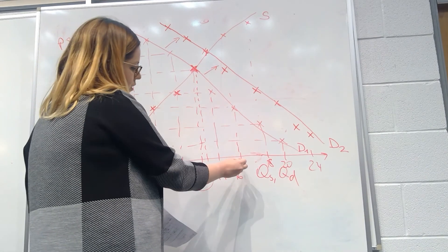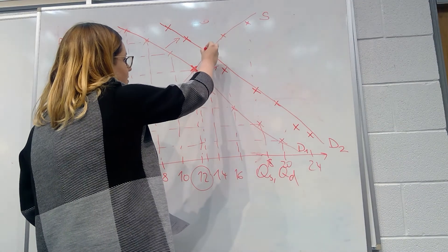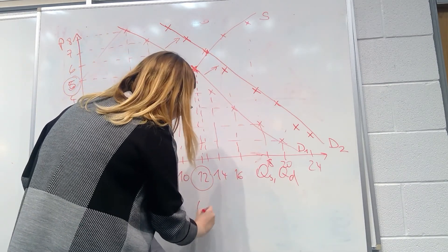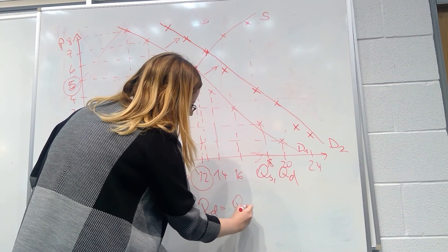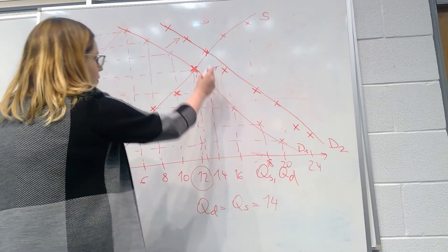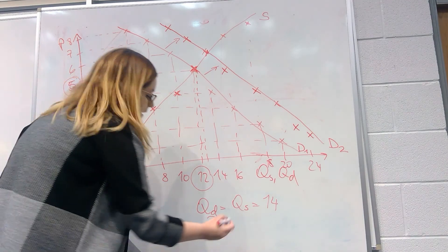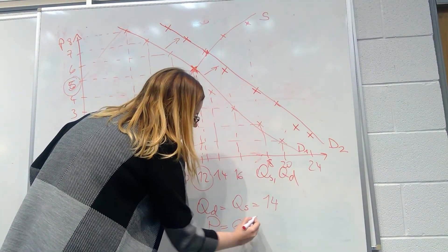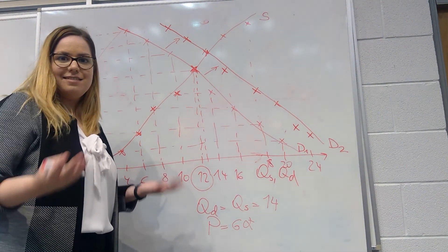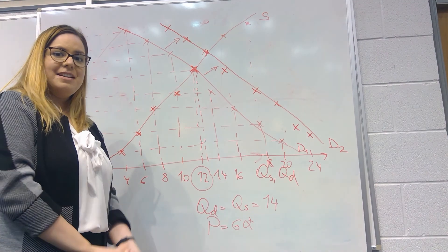Our new equilibrium is where the new demand curve D2 and the initial supply curve cross — where quantity demanded equals quantity supplied, both at 14 million. The price in that case is £6, which you can see on the y-axis. So that completes task three, and these are all the tasks for our second week of tutorials. See you next time.